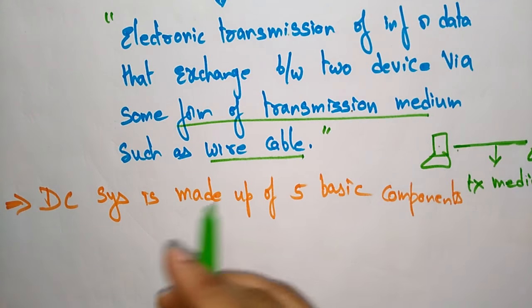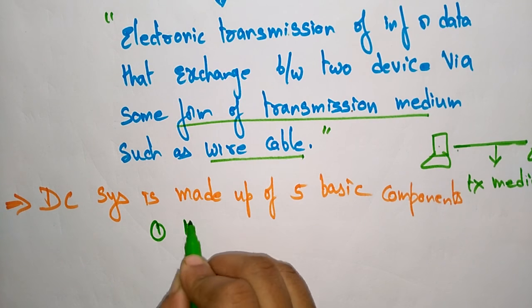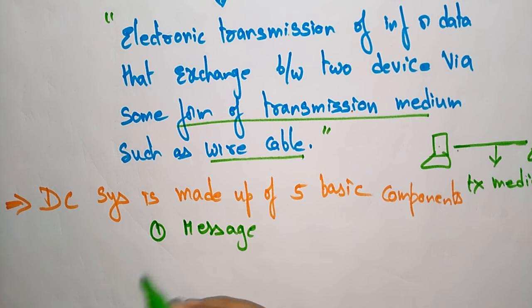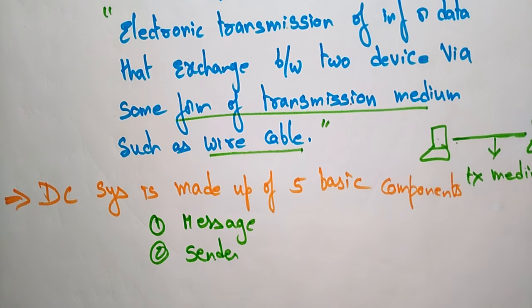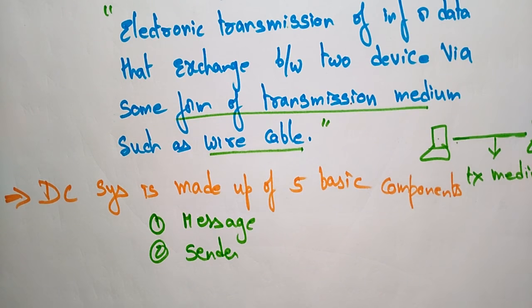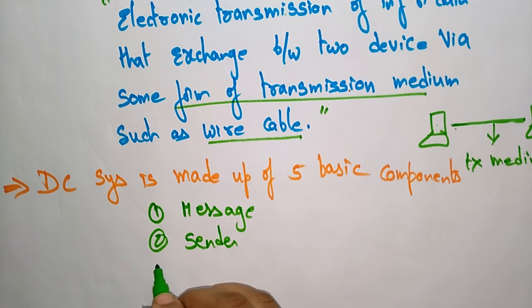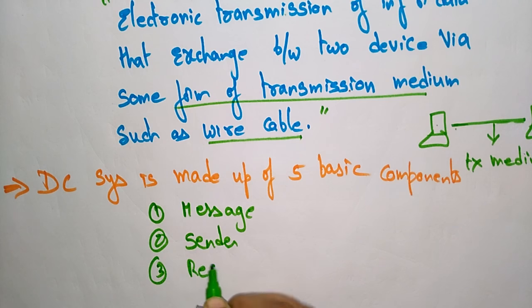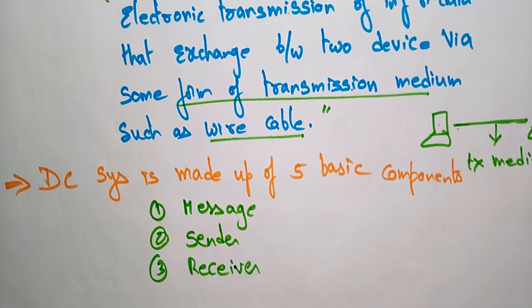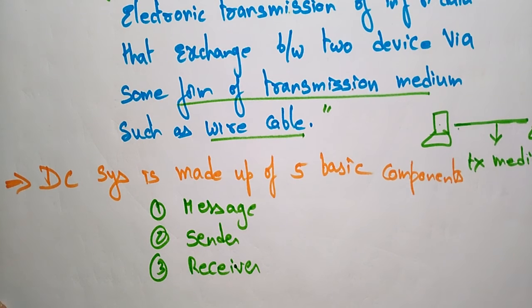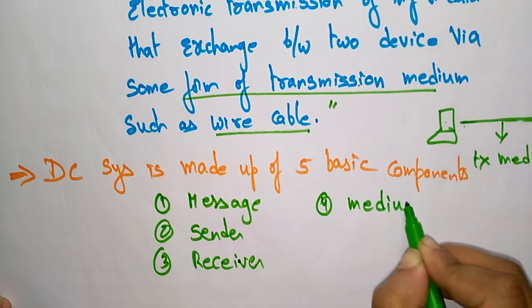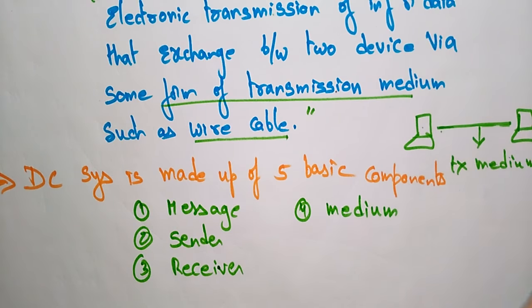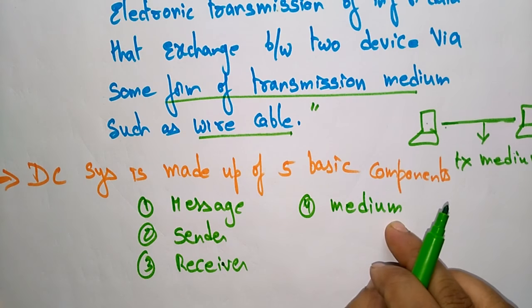The five components are: message — nothing but the data itself; sender — the person or system who wants to send the data; receiver — the person who receives the data; and medium — something required to transmit the data, whether wired or wireless.